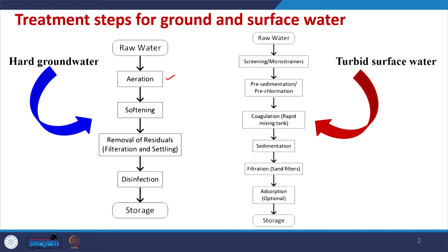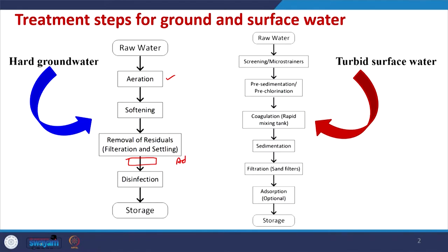For softening, we do the softening process so that hard water is softened before use. Some other types of impurities or residuals may be present in the ground water, and those residuals have to be filtered and settled out. If arsenic is present in the ground water, arsenic also has to be removed, so we may include an adsorption step. Since we are going to use the water for drinking, we have to perform disinfection to remove the maximum amount of pathogens before storing and distributing it.